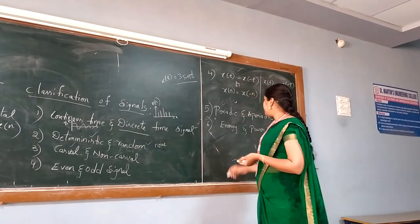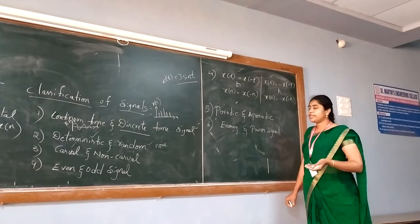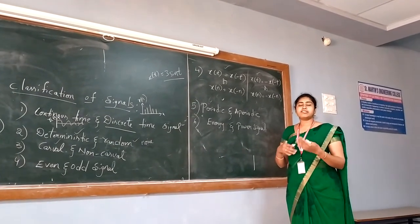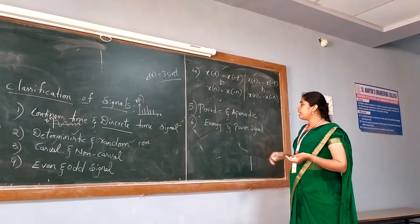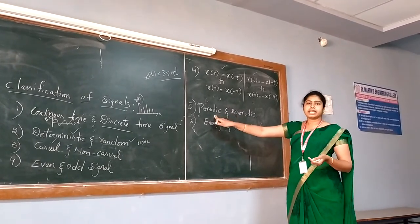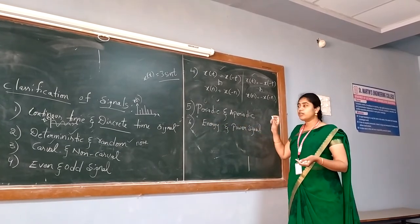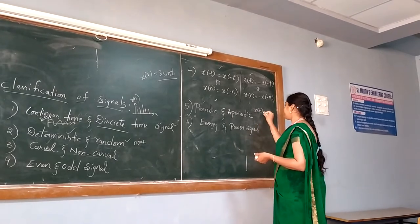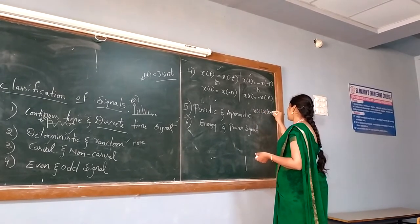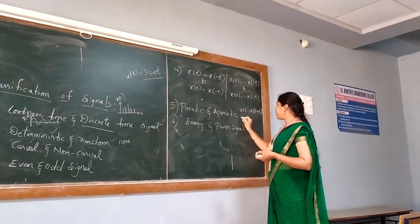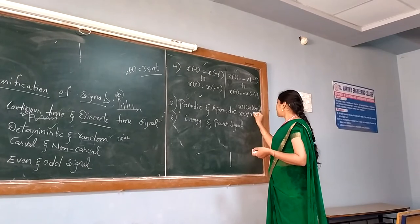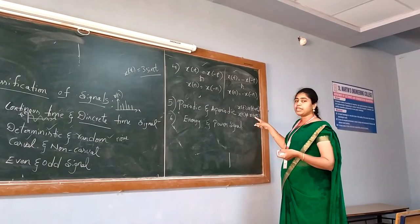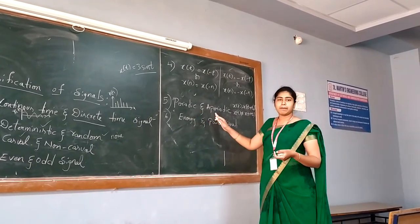Next is the periodic and aperiodic signal. Periodic signal means any signal which repeats at regular intervals of time — that signal is called a periodic signal. To represent it mathematically: X of T should be equal to X of T plus T-naught, where T-naught indicates the time period. For an aperiodic signal, X of T will not be equal to X of T plus T-naught.